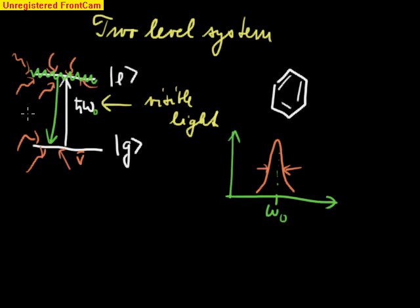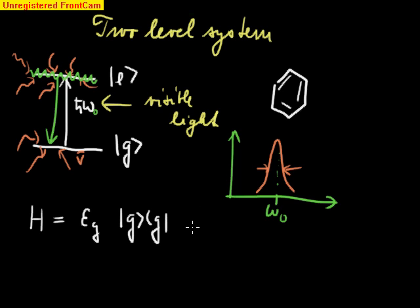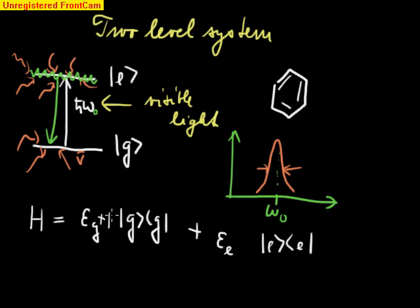What is our Hamiltonian for this two-level system going to look like? We could write first the ground state energy projected onto the ground state, then the excited state energy projected onto the excited state — that would be the system without the bath. But if we want to include the bath, it must be described by some Hamiltonian, and we allow that Hamiltonian to differ depending on whether the system is in the ground or excited state.